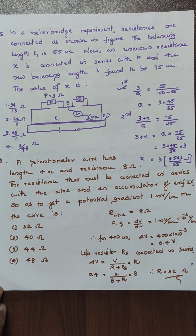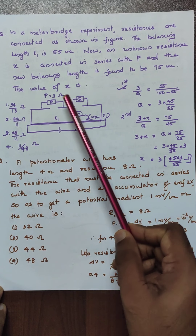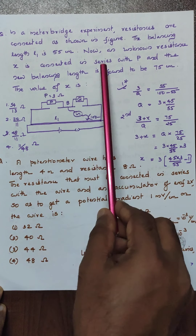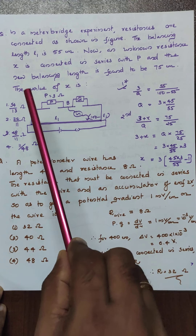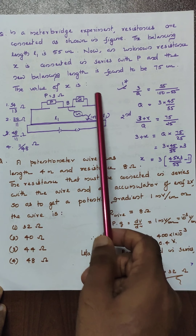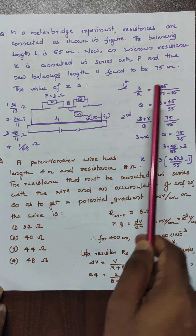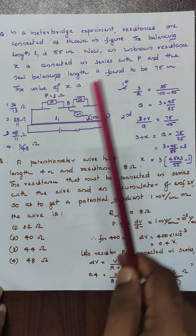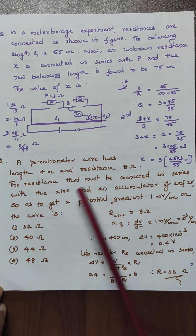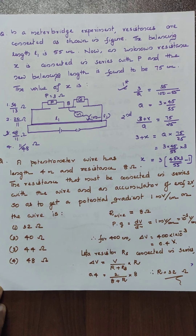In a meter bridge experiment, resistances are connected as shown. The balance length L1 is 55 cm. Now, an unknown resistance X is connected in series with P — in addition to the existing 3, another X is added. The new balance length is 75 cm, with no change in Q. In the first case: 3 by Q equals 55 by 45. In the second case: 3 plus X by Q equals 75 by 25. Solve it and you get the answer.